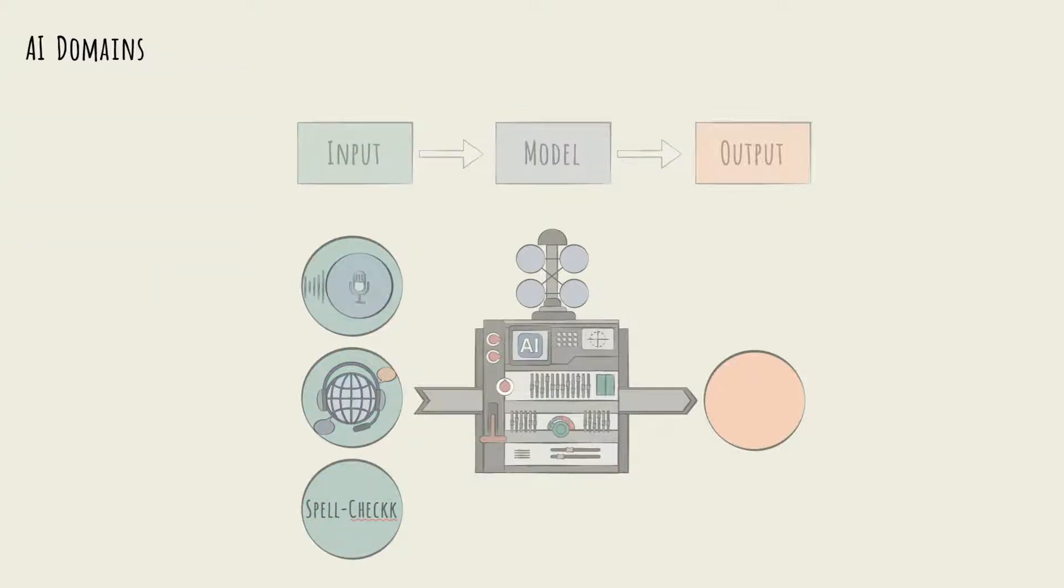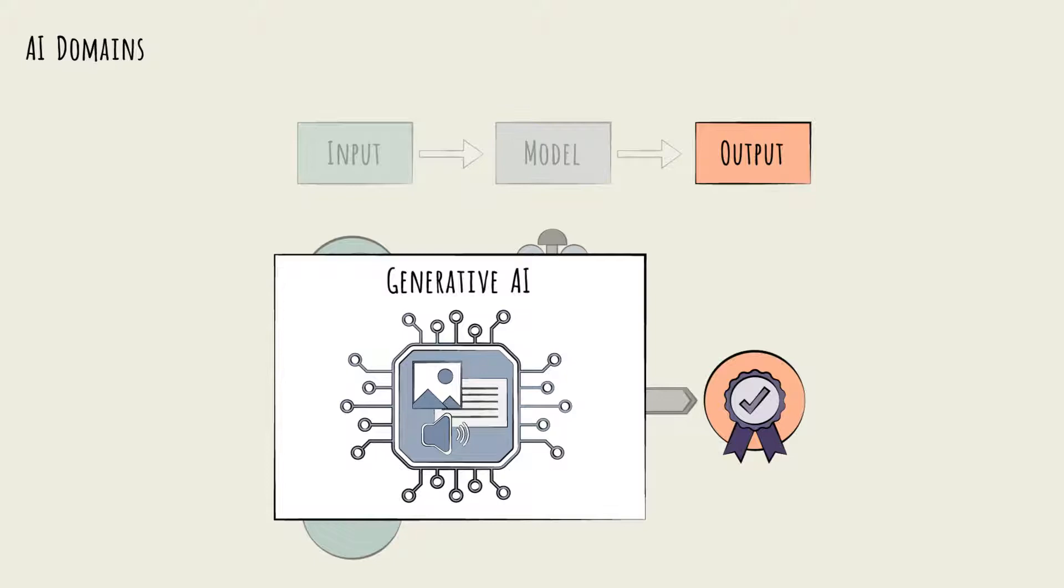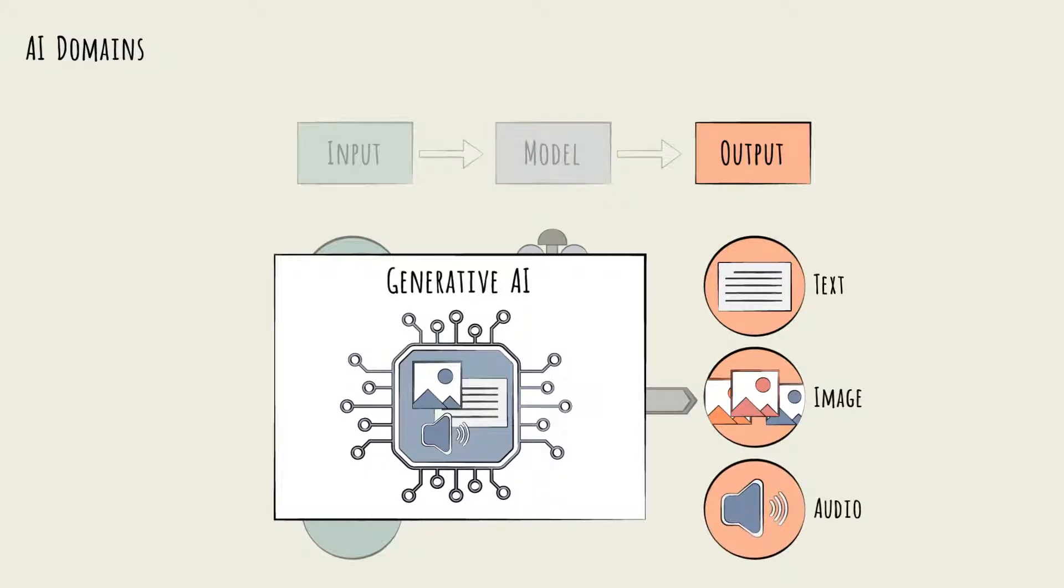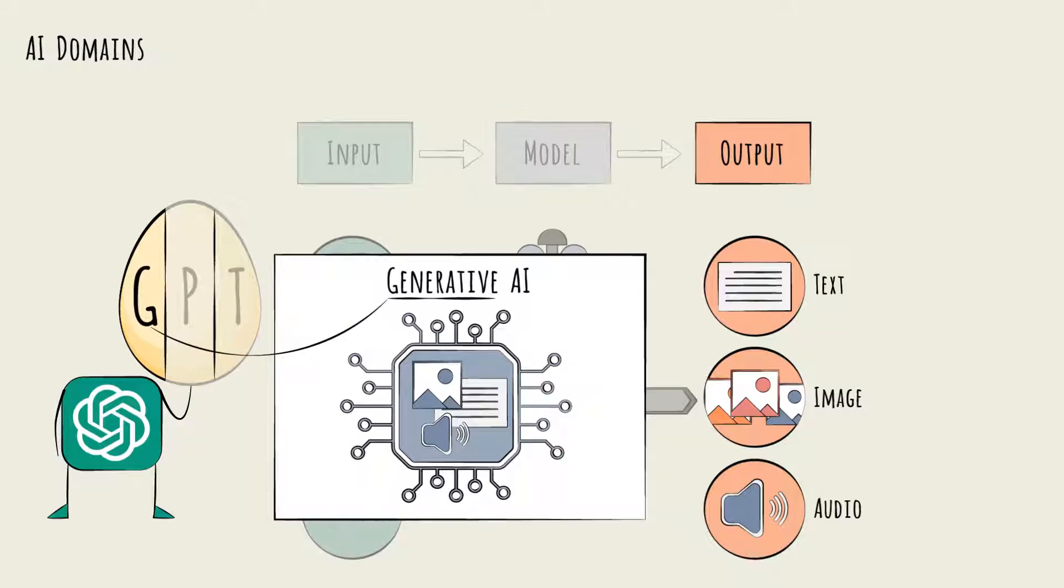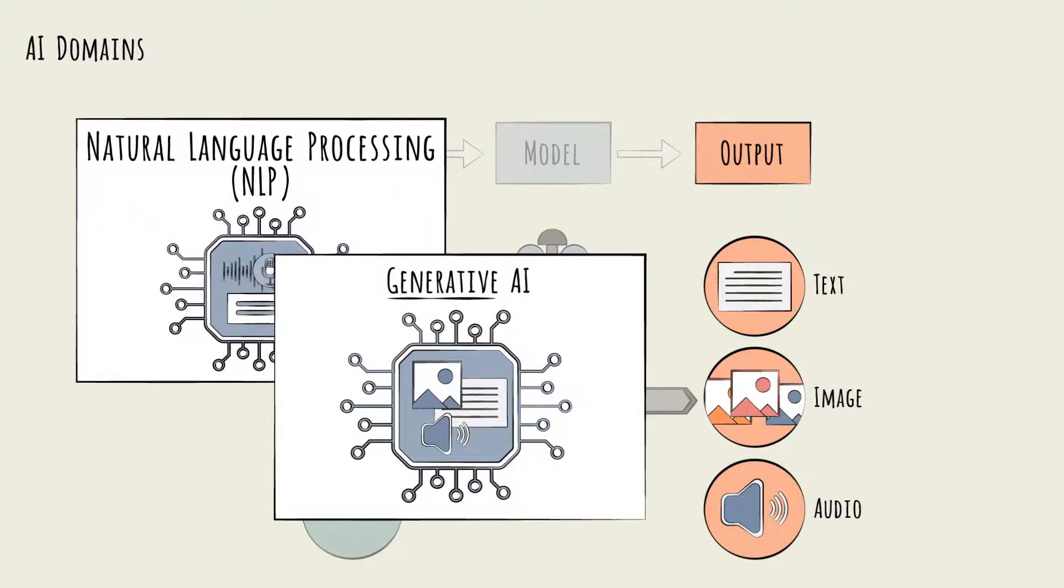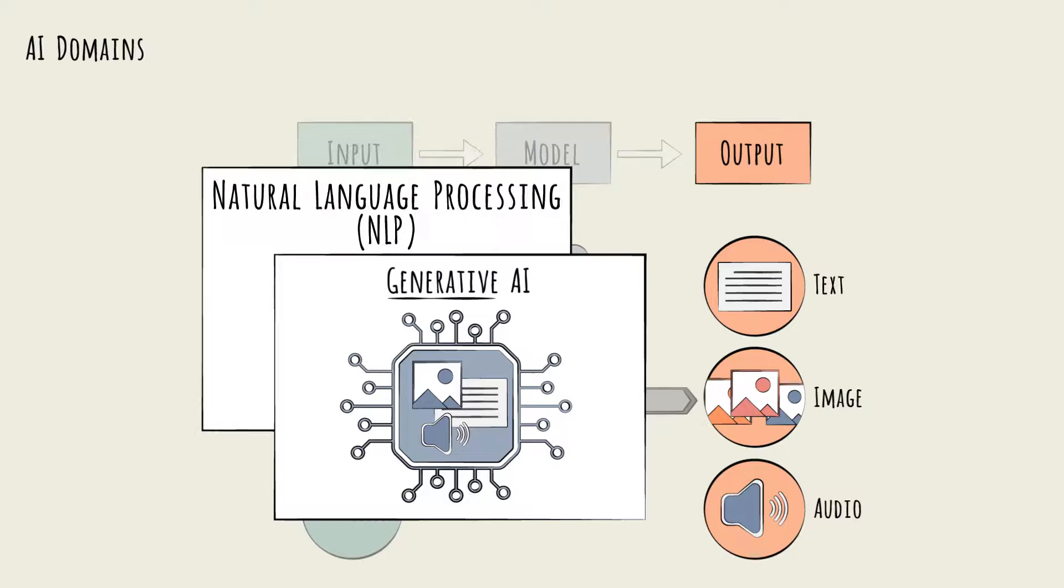On the other hand, sometimes AI domains are described by the nature of their output—the tasks they achieve. A great example is Generative AI, or GenAI, a domain that focuses on using AI to generate new text, image, or audio content. That G in ChatGPT? It stands for generative, and we'll get to the P and T later. And you can already see the domains overlapping. Since ChatGPT relies on natural language inputs, it also falls into the NLP domain.